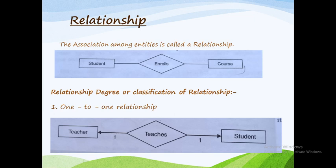The next concept is relationship. Relationship means the association among entities is called a relationship. Entities are connected through associations. For example, consider student and course as two entities. Students enroll in a number of courses such as BSc and arts courses. Student and course are entities, and enroll is the relationship. Some particular students are enrolled in some particular courses — that is the relationship.